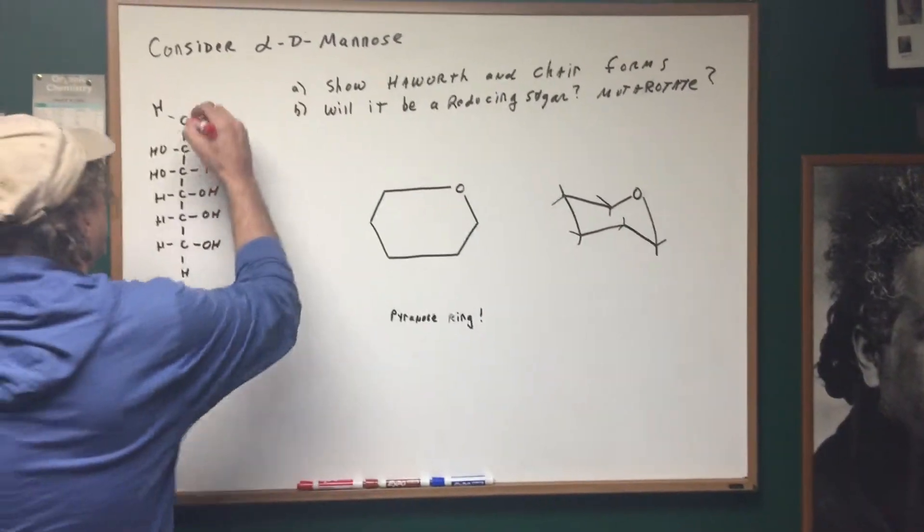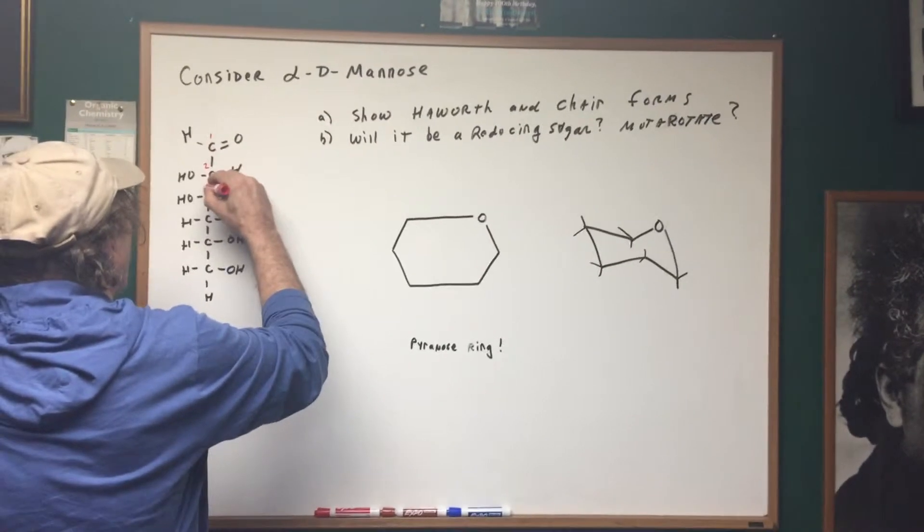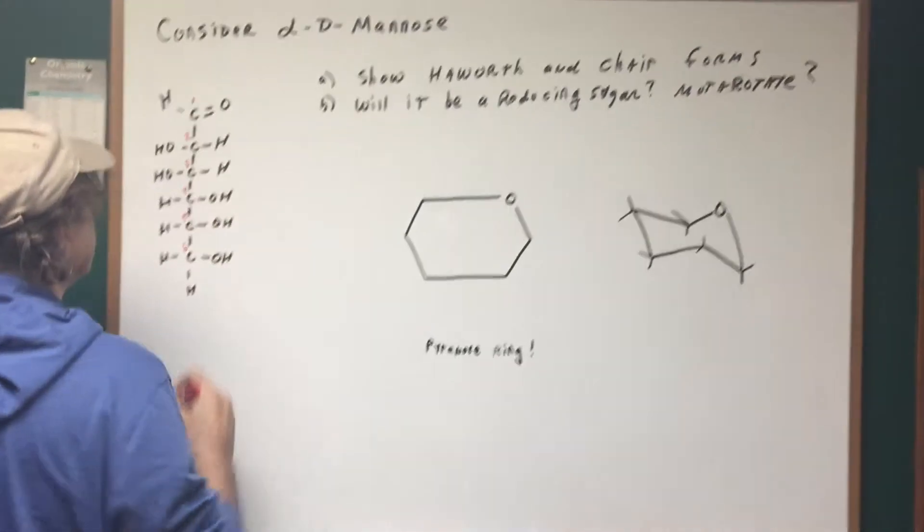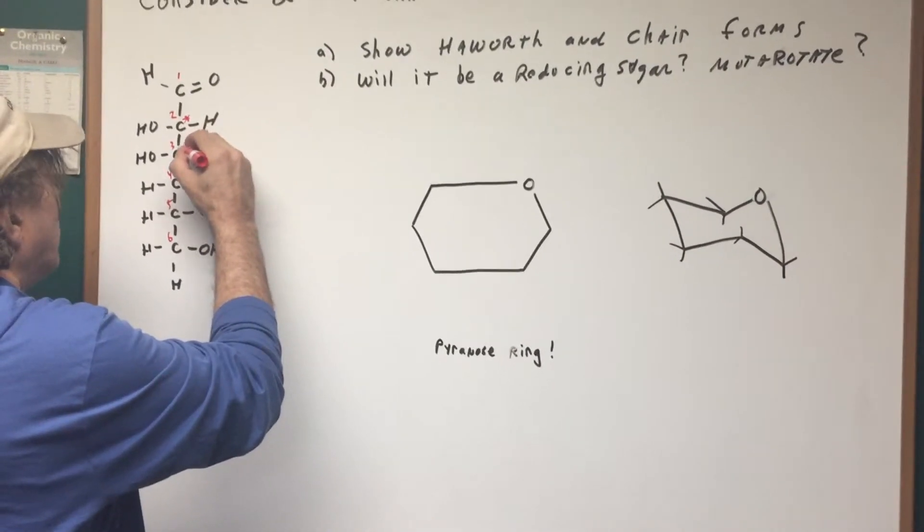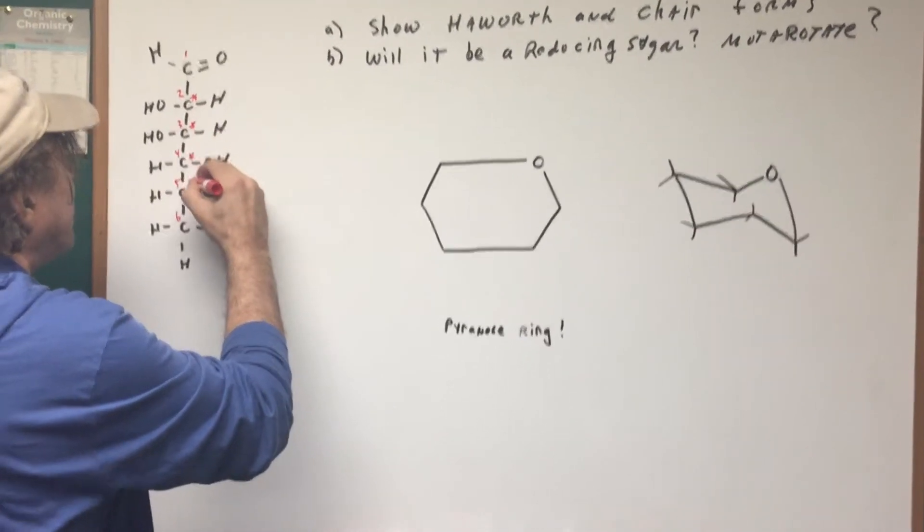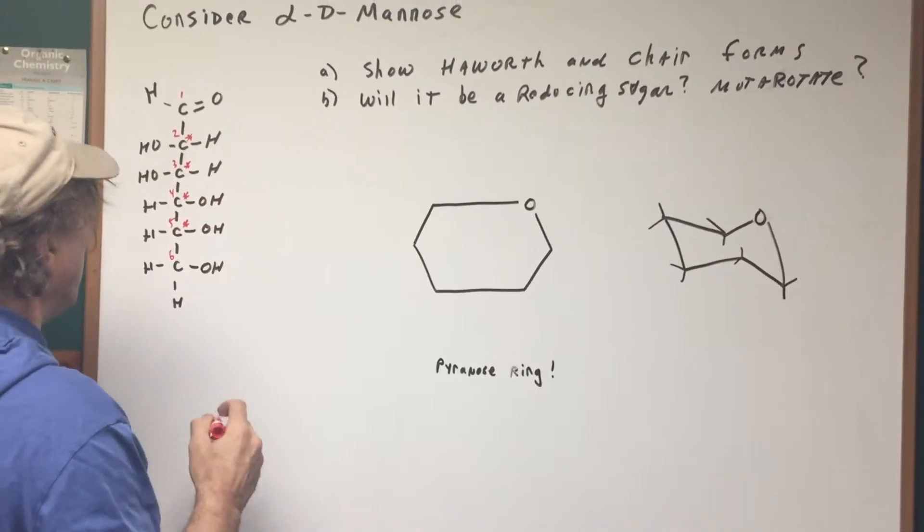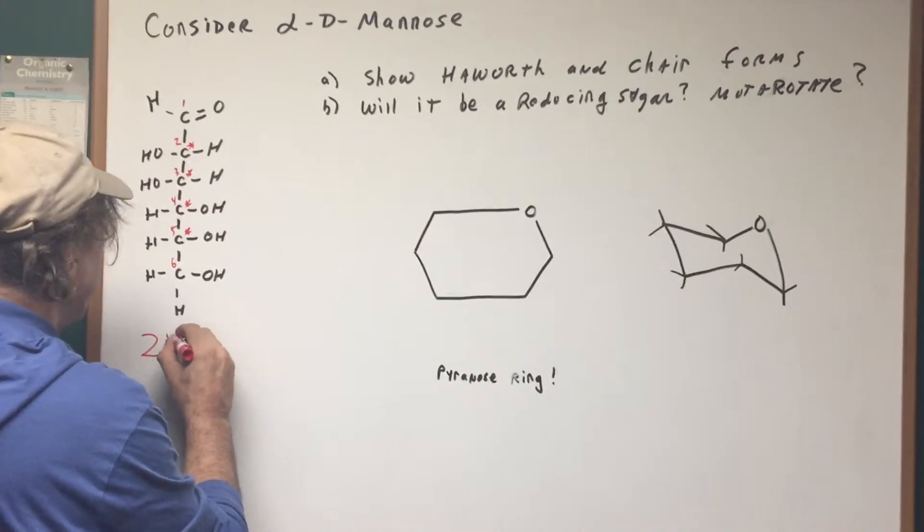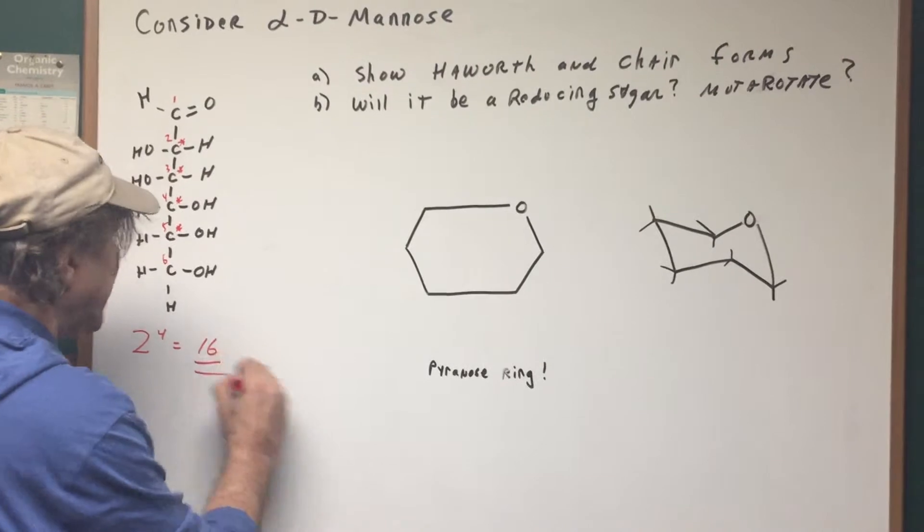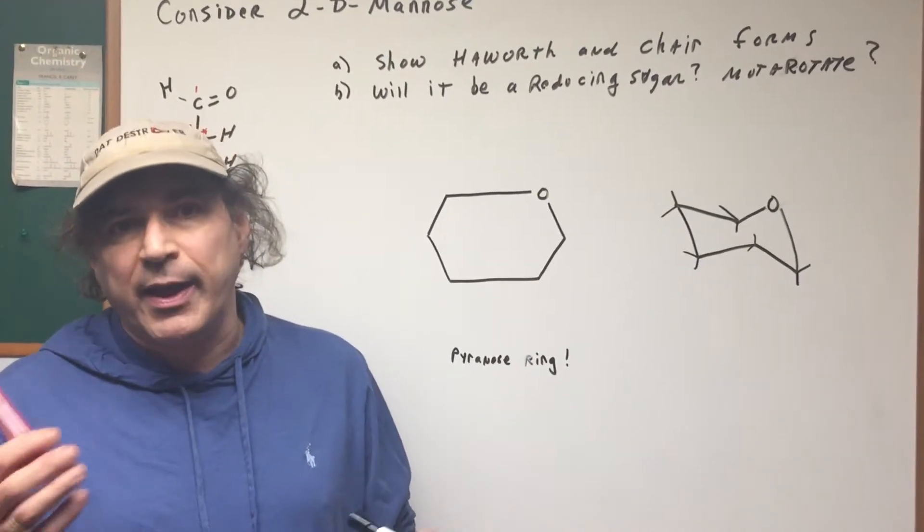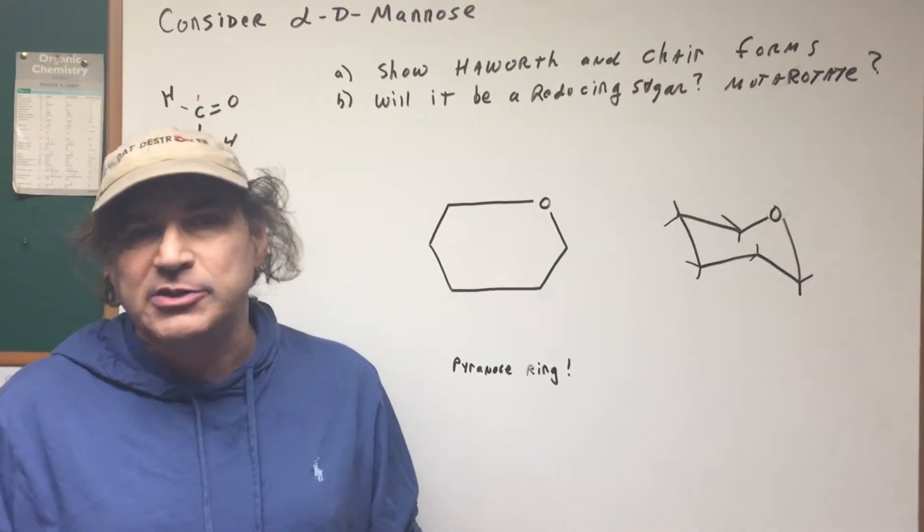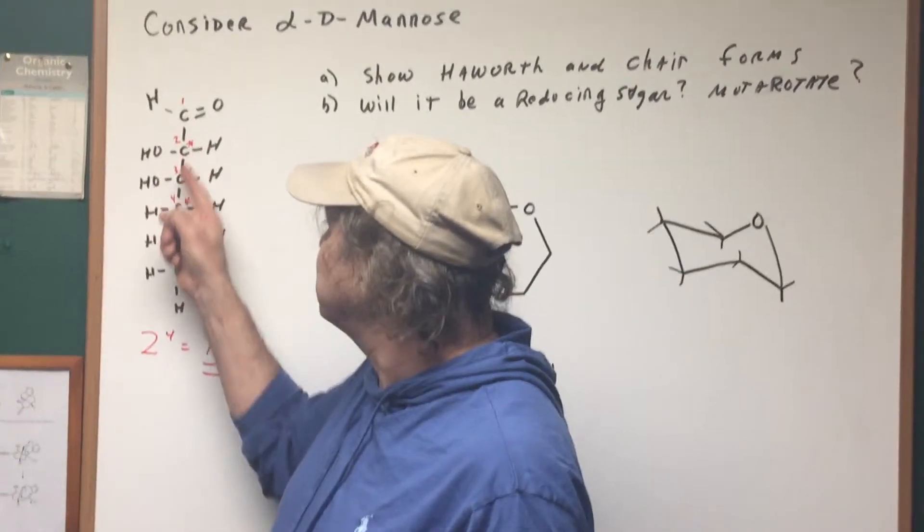So the first thing that I'm going to do is I'm going to number the carbon starting at the carbonyl group. So we have one through six. Now, this carbon here is chiral, this is chiral, this is chiral, and this is chiral. So we have two to the fourth, or we have 16 possible stereoisomers, this one being mannose.